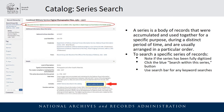What does a series of records actually mean? A series is a body of records accumulated and used together for a specific purpose during a distinct period of time, usually arranged in a particular order. An example would be a group of color Army photographs from the Vietnam War. It helps to search by series because you will know you are looking at records most related to your research. To search a specific series on our online catalog, note whether the series has been fully digitized — you can usually see that in green right under the series title.